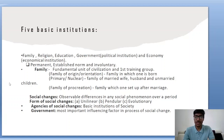Social changes are observable differences in any social phenomena over a period of time. Forms of social change include unilinear, pendular and evolutionary. For example, antibiotic resistance led to the creation of more science-based programs focused on combating it, which is an evolutionary social change. Agencies of social change include family, religion, education, government and economy.